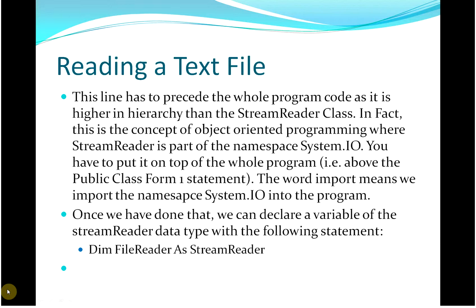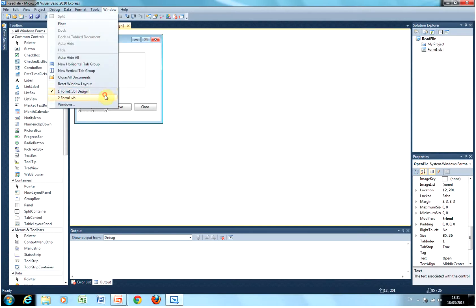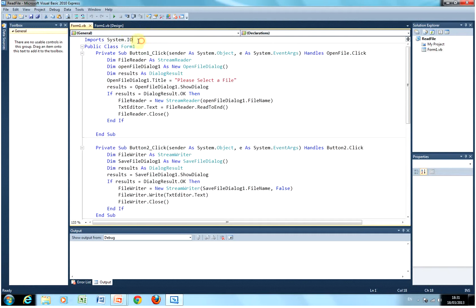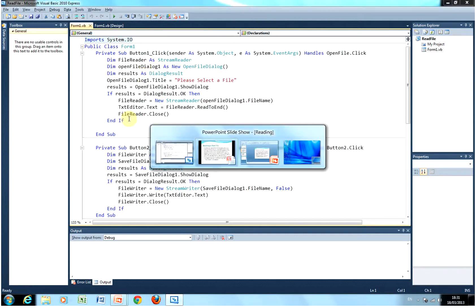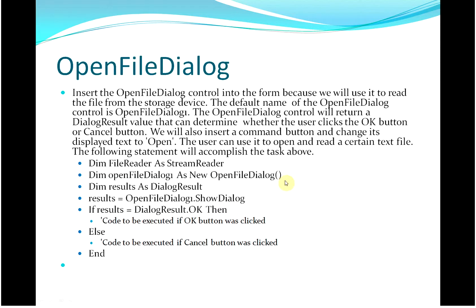So we have to go back to the code. Import system.io — that has to be at the very beginning. The word import means we have to import the namespace system.io into the program. And then we're able to declare. This is a general way of getting the dialogue. I'll leave it up for a second or two because the code is later on.